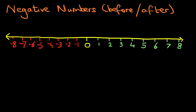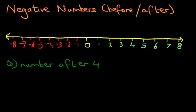Now suppose the question being asked is: what number comes after 4? Let's put a question mark. Now on the number line, this is a very simple one. We've got number 4 over here. The number after — and don't forget we're going to the right — is 5. So the number after 4 is 5.